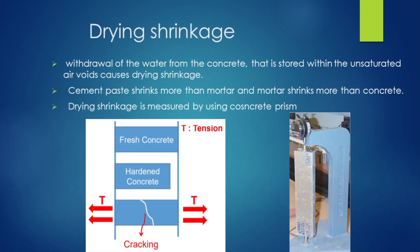Drying shrinkage: in fresh concrete, cement water gel is formed. In the hydration reaction, there is a loss of moisture, which creates capillary pores. In those capillary pores, there is capillary tension action, which causes cracks. This is drying shrinkage. To measure it, we have a concrete prism ready. A dial gauge is used to measure the change in length of the concrete surface. The change in length divided by the original length gives the drying shrinkage value.